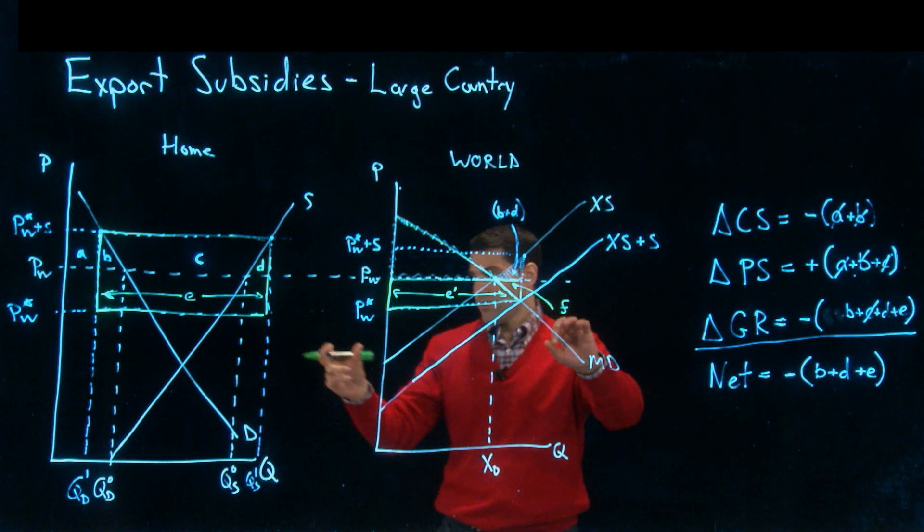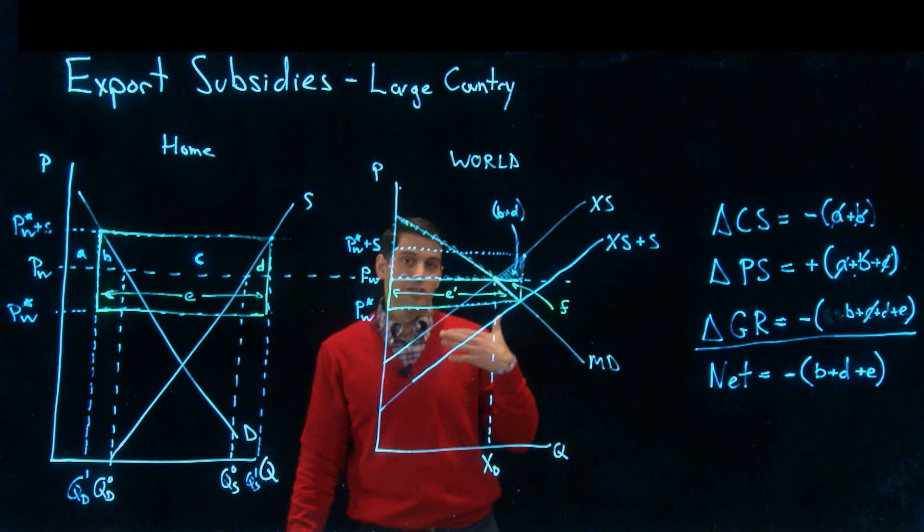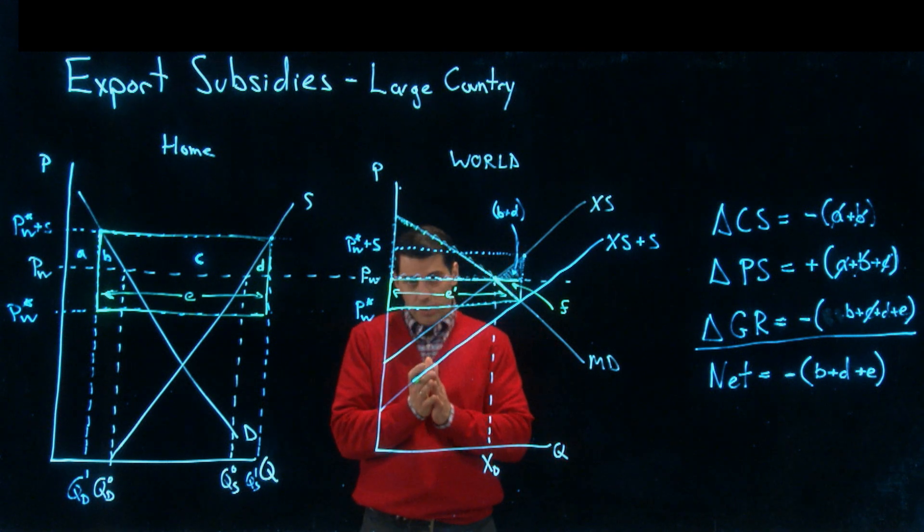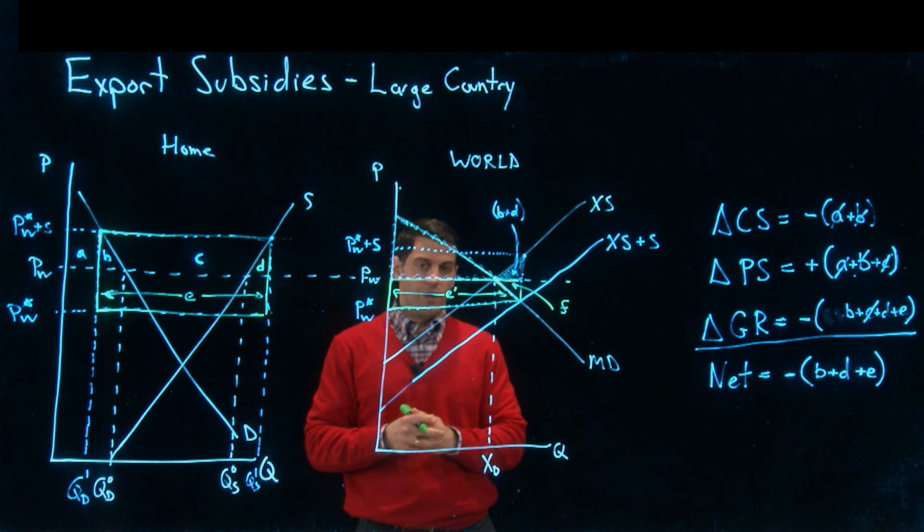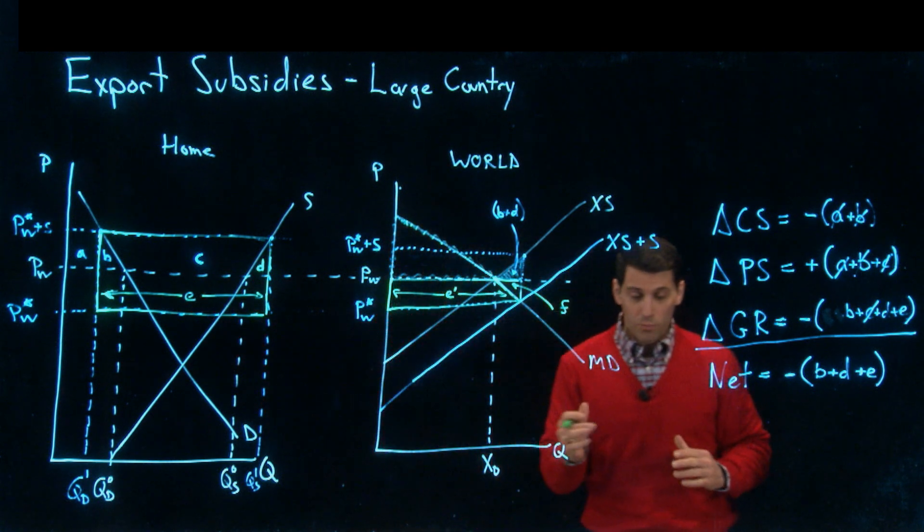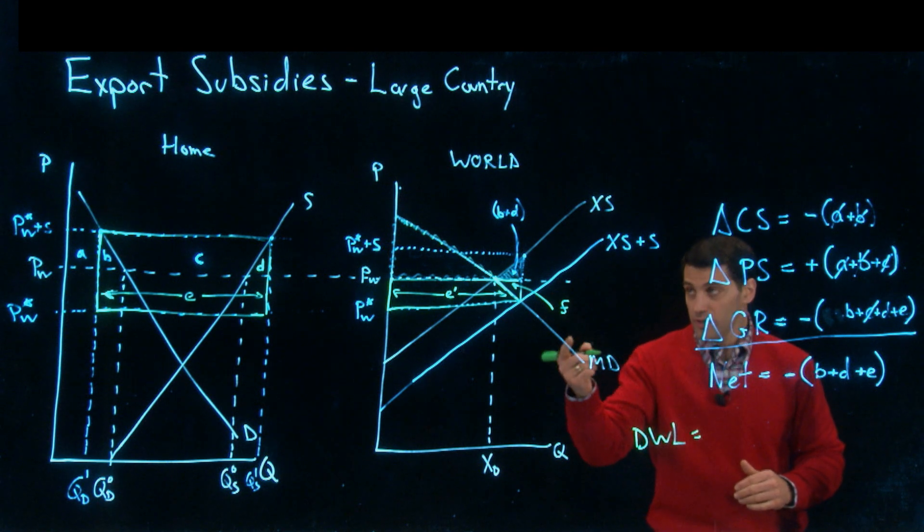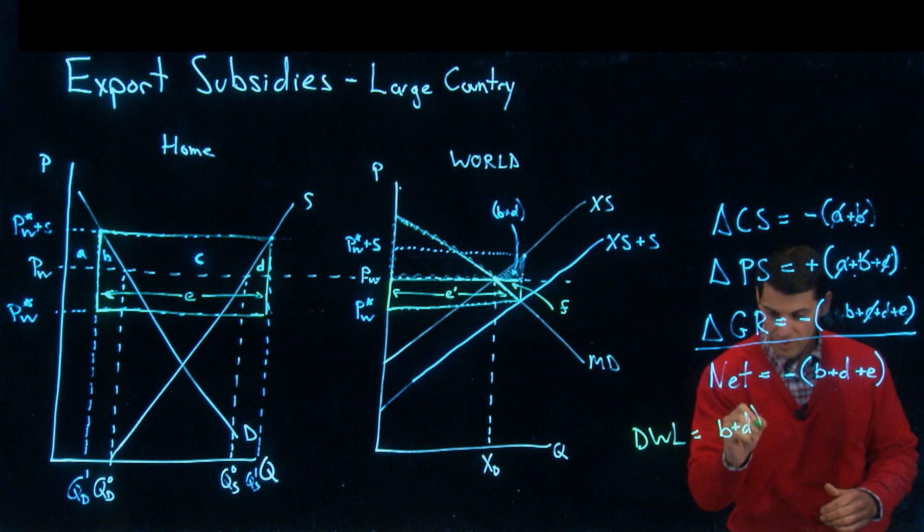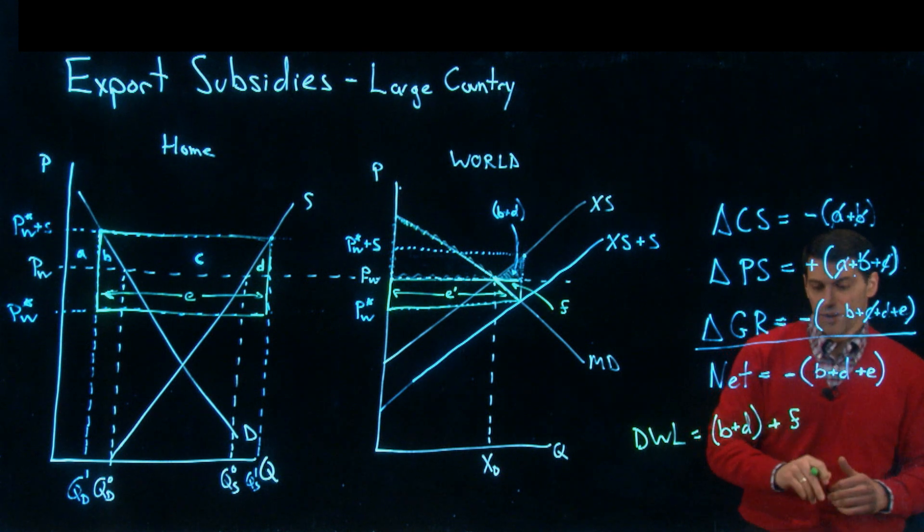That's the part of E that doesn't accrue to anyone. There's actually an additional deadweight loss when we're thinking in global terms, on top of the home country's deadweight loss. The total global deadweight loss is equal to the home country's deadweight loss of B and D plus that area F.